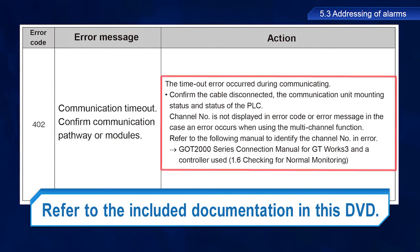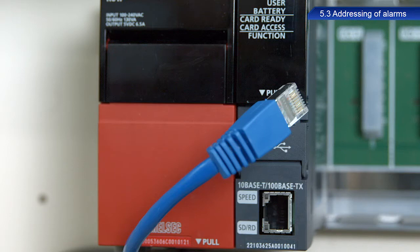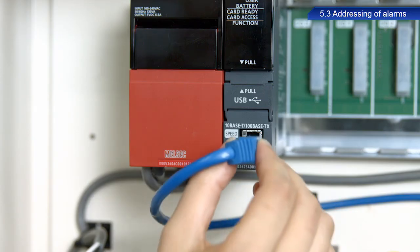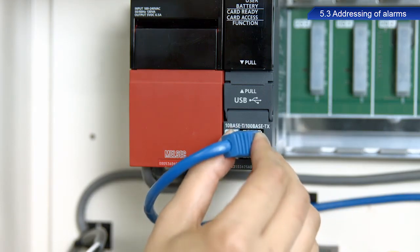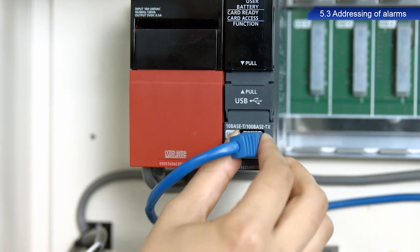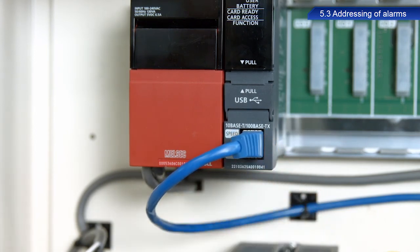As you can see, possible troubleshooting for the 402 error code is cable disconnected, so let's check the cable connecting the GOT and PLC. The cable was not connected correctly, which triggered the alarm. Reconnect the cable correctly. The cause of the error has been resolved.